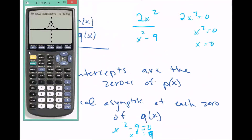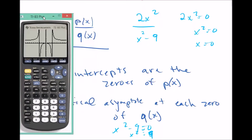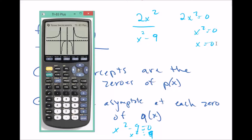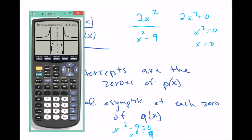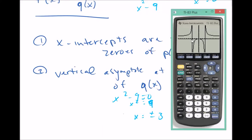Graphing 2x squared over x squared minus 9 confirms what we found. There's the x-intercept at x equals zero, and two vertical asymptotes at negative 3 and plus 3. The lines on the graph running from top to bottom are not part of the graph — the calculator is just trying to connect branches that don't actually touch. The graph will never cross those lines at negative 3 and plus 3.